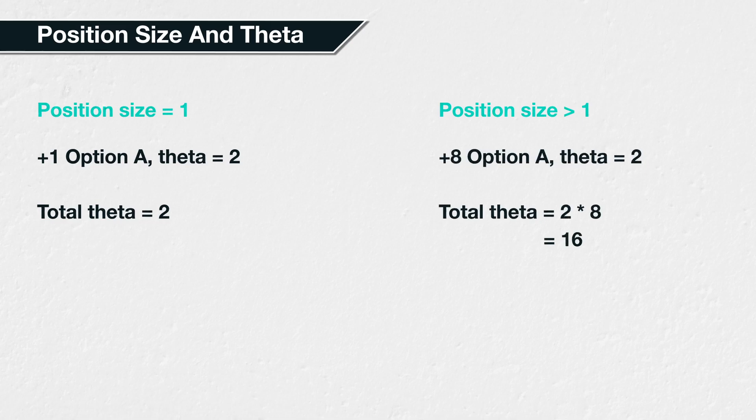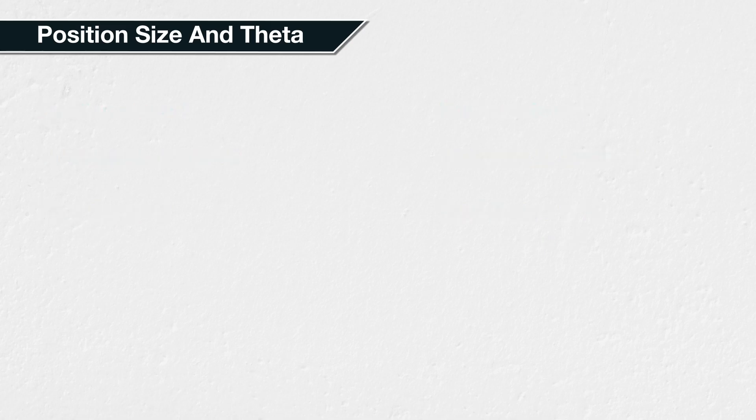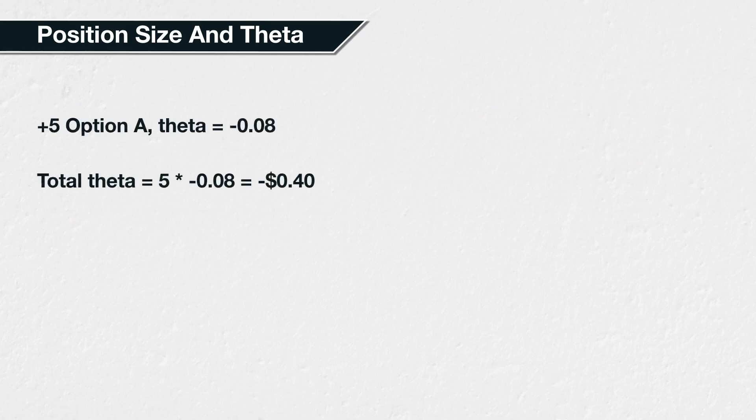The Bitcoin options on Deribit have a contract multiplier of one, meaning each option contract represents a notional position of one Bitcoin. With this in mind, let's look at a few examples of calculating the total theta taking into account the position sizes. For example, if you purchase five Bitcoin call options with a theta of minus 0.08 each, the total theta of your position is minus 40 cents. This is calculated as 5 multiplied by minus 0.08, which equals minus 0.4.